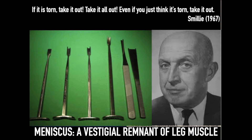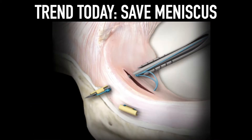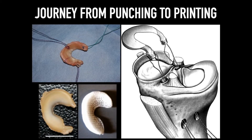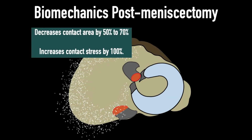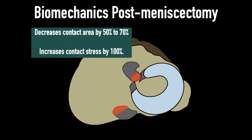Accordingly, Smiley developed many instruments for meniscectomy — these are various meniscotomes, popularly known as Smiley meniscotomes. But now, as we know, the trend is towards saving the meniscus. Many techniques and instruments have been developed to save the meniscus. Today we repair the meniscus whenever it is repairable. When there is no meniscus, we transplant using an allograft, and when allograft is not possible, we can replace the meniscus with a meniscus scaffold.